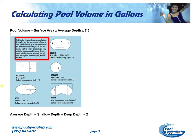Calculating your pool volume in gallons — you might be able to find a free app on the internet to help with this. But it's not that complicated. You're going to take your surface area, and if you have a rectangular pool, it's as simple as length times width. If you have a circular pool, you're going to take your radius, square it, and multiply it times pi. That's going to give you your surface area.